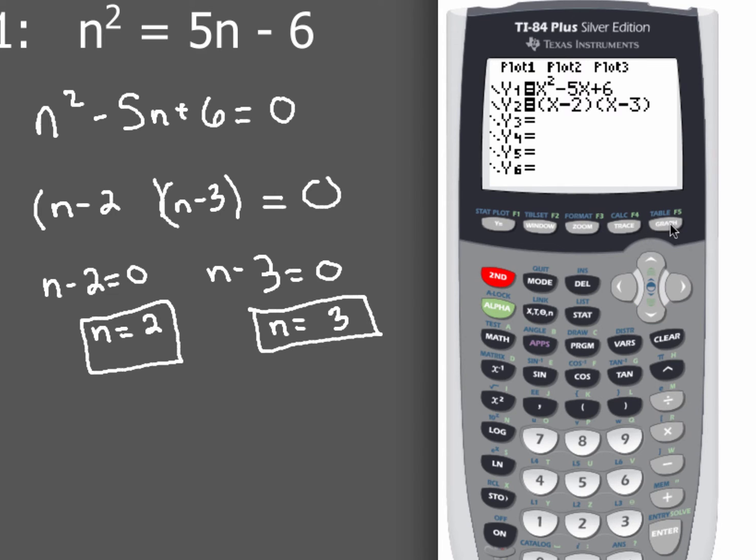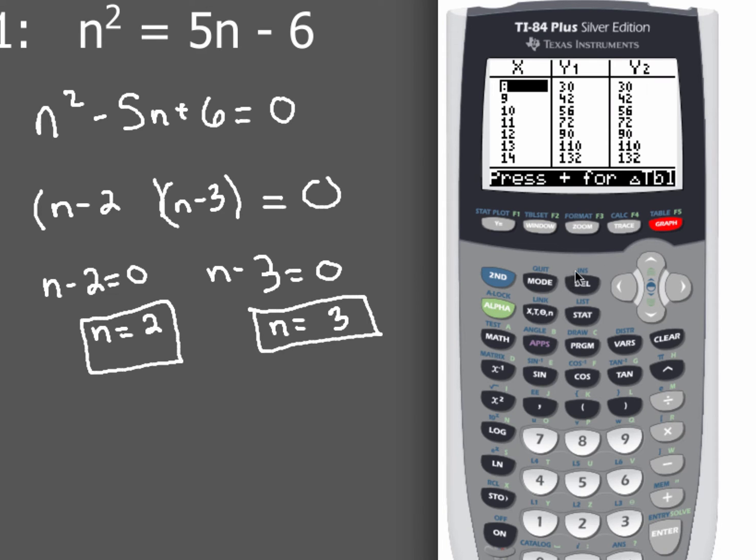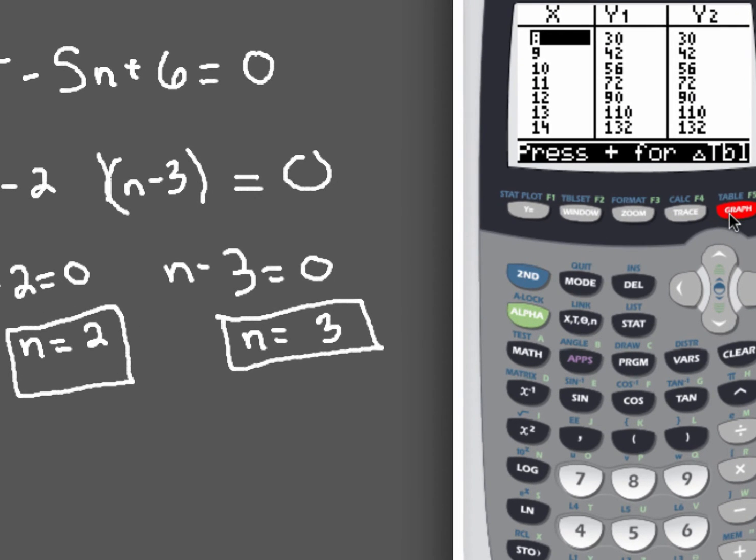So after you have those two pieces in there, we're not going to graph this thing, we're actually going to look at the table first, because we want to make sure that the equation that we had initially and the factors that we came up with are the same. So we're going to hit second and then graph, alright, because that'll give me my table.